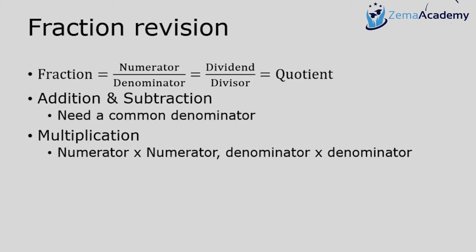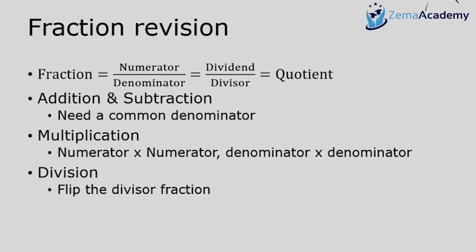For multiplication, that's actually the easiest operation: we just multiply numerator by numerator and denominator by denominator. For division, it looks very similar, but if we divide one fraction by another, we flip the second fraction — the divisor fraction — and then we do a multiplication.